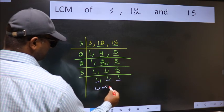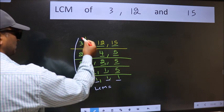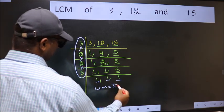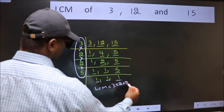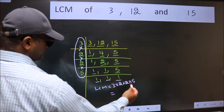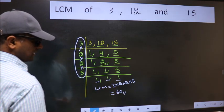So our LCM is, LCM is the product of these numbers. That is 3 into 2 into 2 into 5. When we multiply these numbers, we get 60 is our LCM.